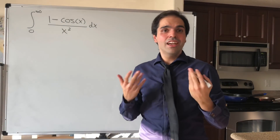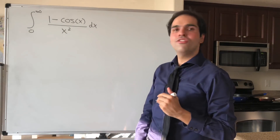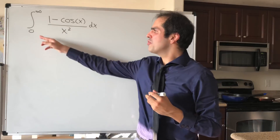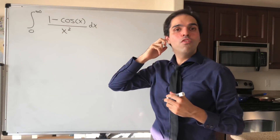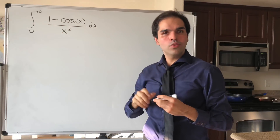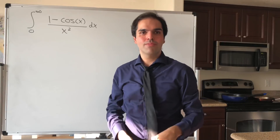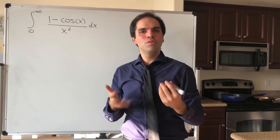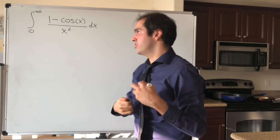Thanks for watching, and today we'll evaluate a beautiful integral, namely the integral from 0 to infinity of (1 minus cosine of x) over x squared. And we're going to do that using the beauty of complex numbers.